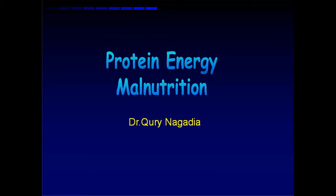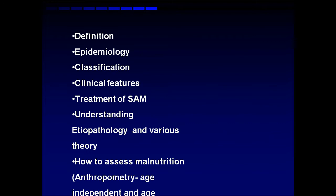Protein energy malnutrition. When we learn this topic, we should know certain subtopics: definition, prevalence of protein energy malnutrition, how to classify it, what are the clinical features, what is the treatment of severe acute malnutrition, the etiopathology and various theories regarding it, and how to assess malnutrition through anthropometry and through age-dependent and age-independent criteria.